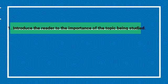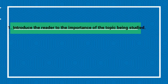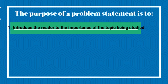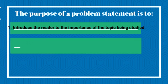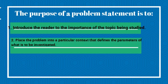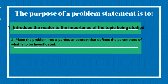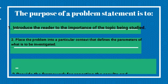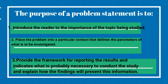The purpose of a problem statement is, first, to introduce the reader to the importance of the topic being studied. The reader is oriented to the significance of the study and the research questions or hypothesis to follow. Second, to place the problem into a particular context that defines the parameters of what is to be investigated. And lastly, to provide the framework for reporting the results and indicate what is necessary to conduct the study and explain how the findings will present this information.